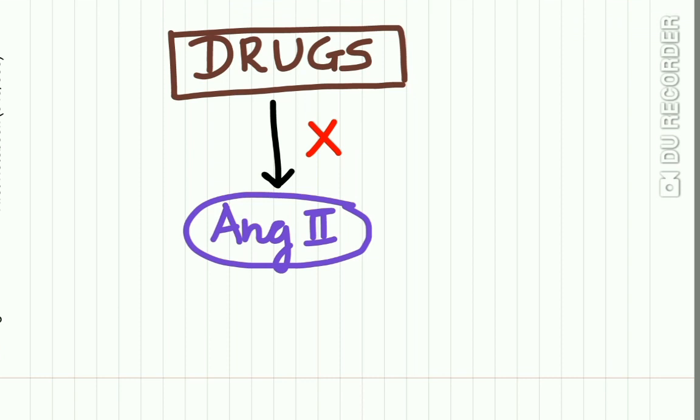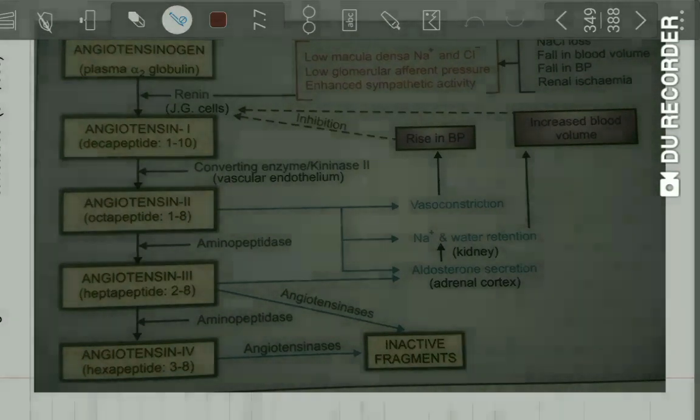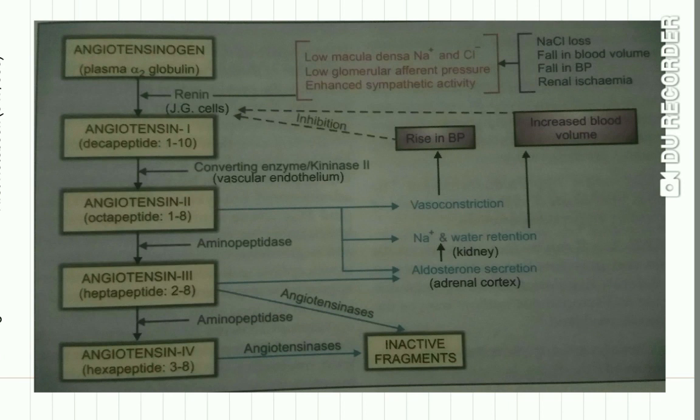Drugs which interfere with the production of angiotensin 2 have great importance in treatment of cardiovascular diseases. Let us study how this angiotensin 2 enzyme is generated. Plasma alpha-2 globulin, also called angiotensinogen, is the precursor. Renin is an enzyme secreted by the kidney that acts upon plasma alpha-2 globulin to form angiotensin 1.